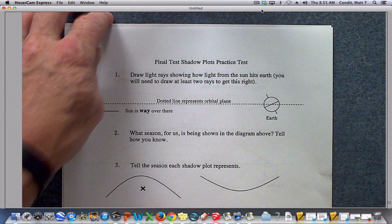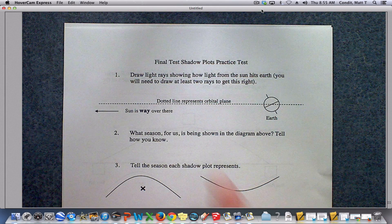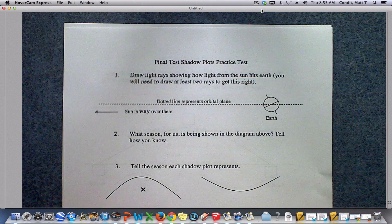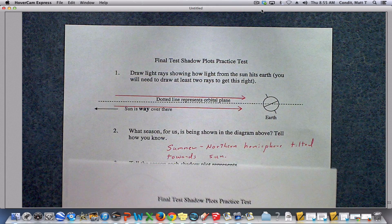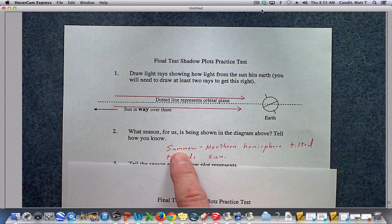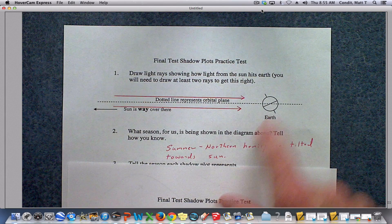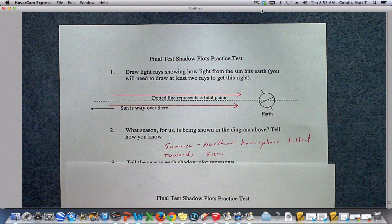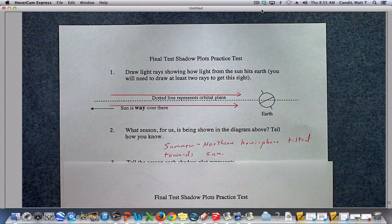So next question, what season is being shown for us in the diagram above? Tell how you know. Well, the season that's being shown here is our summer. And we know it's our summer because the northern hemisphere is tilted towards the sun. In this case, you have a couple of different models like that.